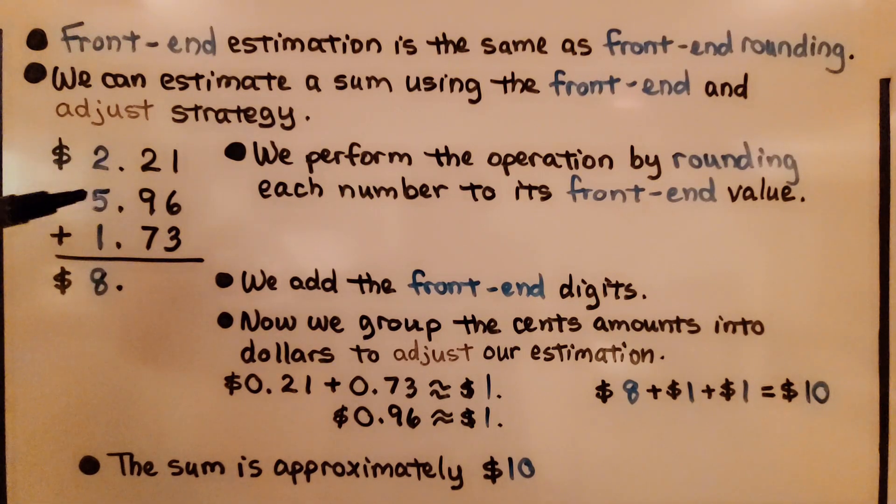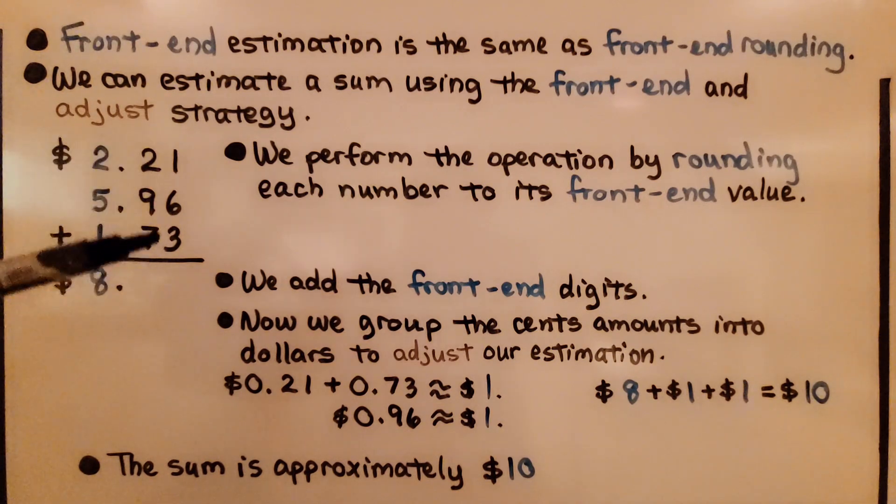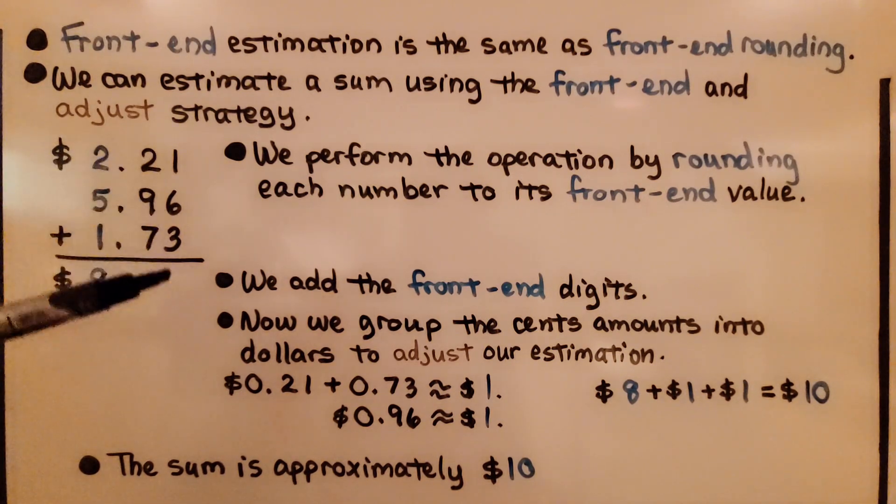This will be $2.00, that will be $5.00, that will be $1.00. We have $8.00. We add the front end digits. Now we group the cents amounts into dollars to adjust our estimate.